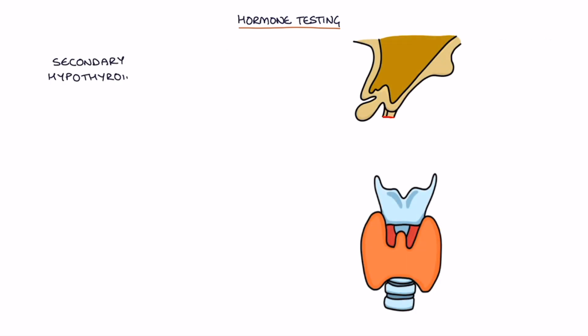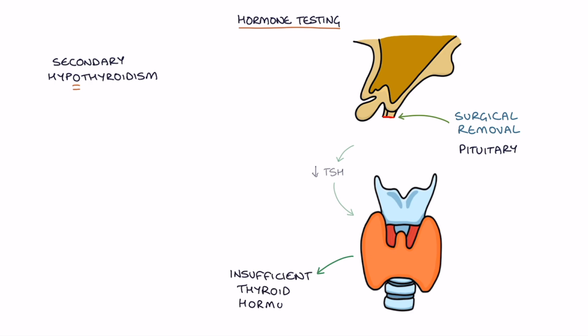Secondary hypothyroidism is where the pituitary behaves abnormally and produces inadequate TSH, for example after surgical removal of the pituitary gland. Inadequate TSH results in understimulation of the thyroid gland and insufficient thyroid hormones. TSH, T3 and T4 will all be low.